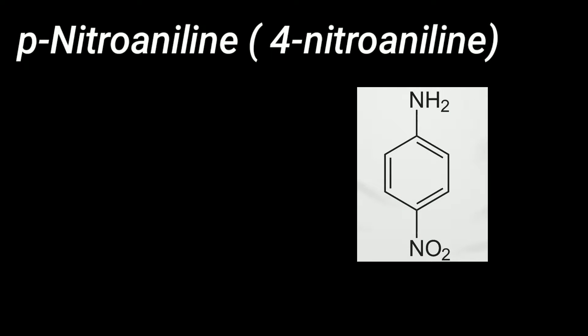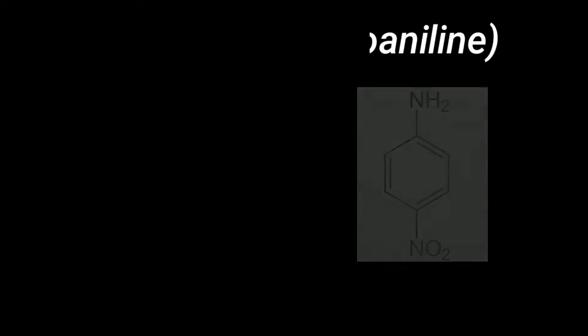Paranitroaniline, as the name says, is an organic compound with the nitro group attached to the para position, also known as 4-nitroaniline.